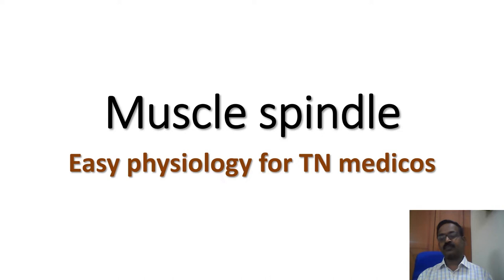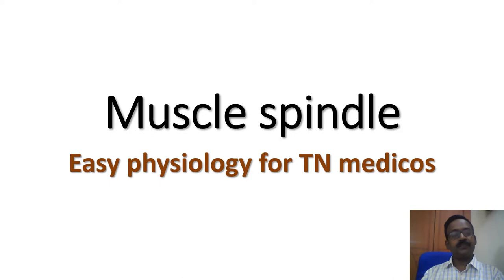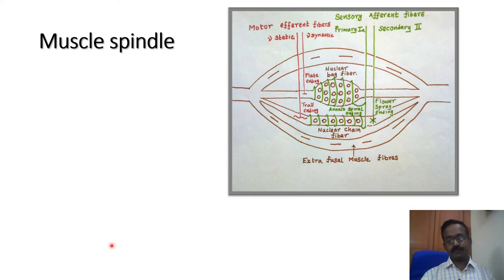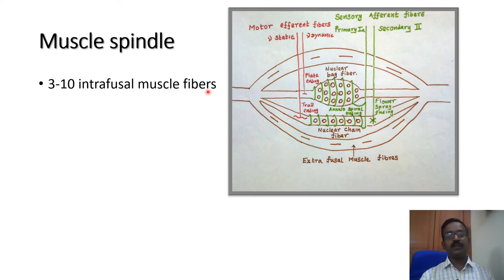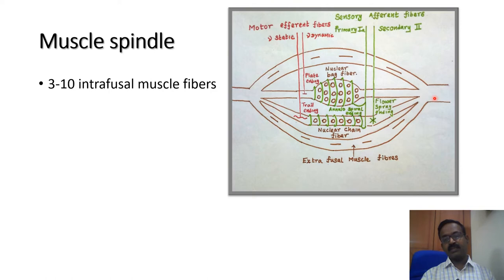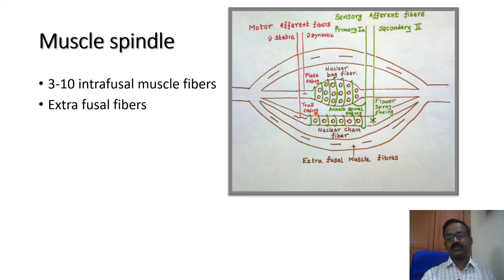It is variable in number depending on the activity of the skeletal muscle. Each muscle spindle contains 3 to 10 intrafusal muscle fibers. In this diagram, these are the intrafusal muscle fibers. They are present in between the extrafusal muscle fiber — this is the extrafusal muscle fiber, which is nothing but the skeletal muscle. The intrafusal muscle fibers are covered by thin connective tissue with a fluid compartment cavity.